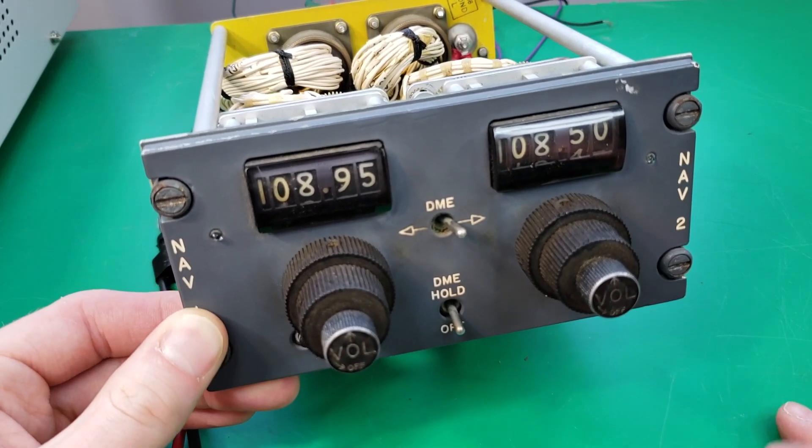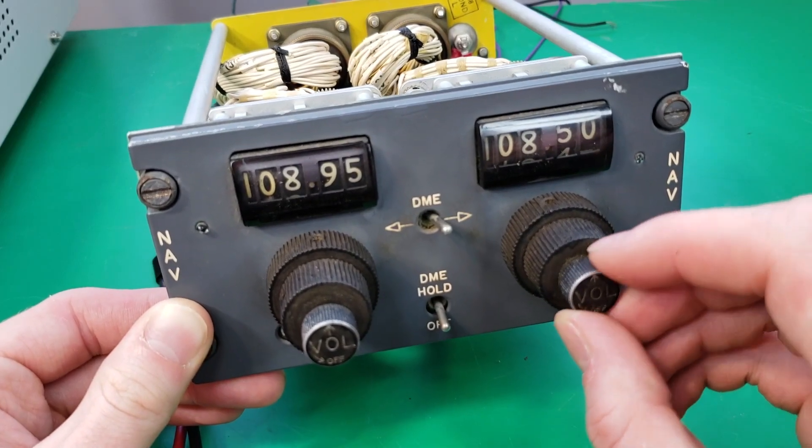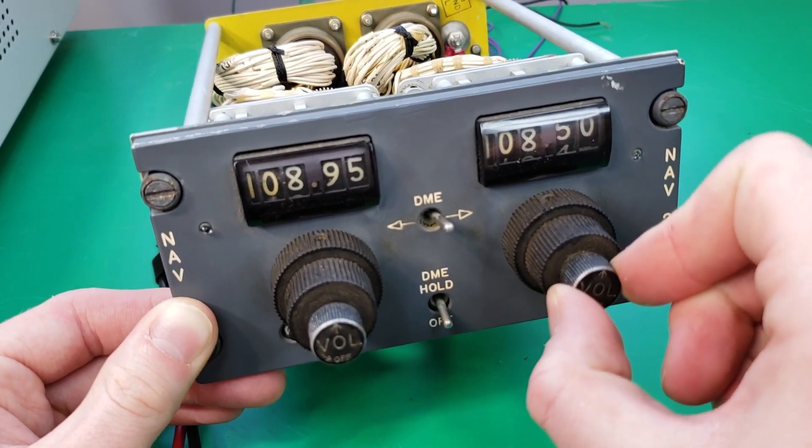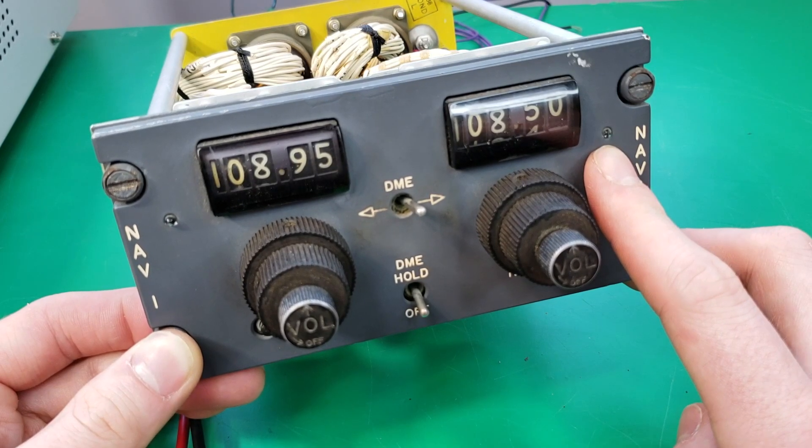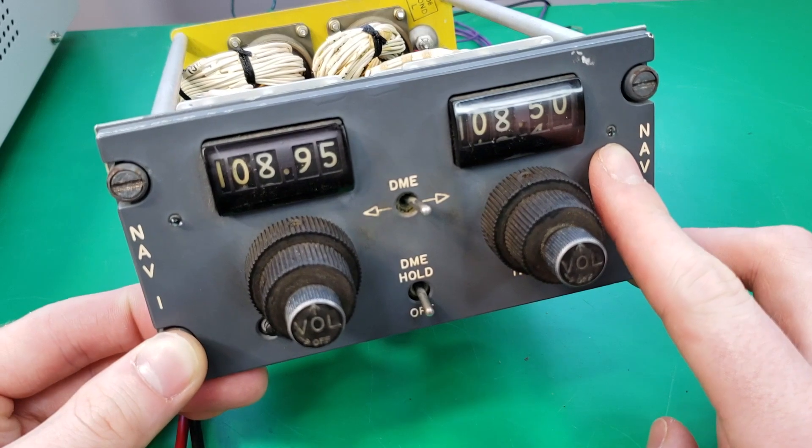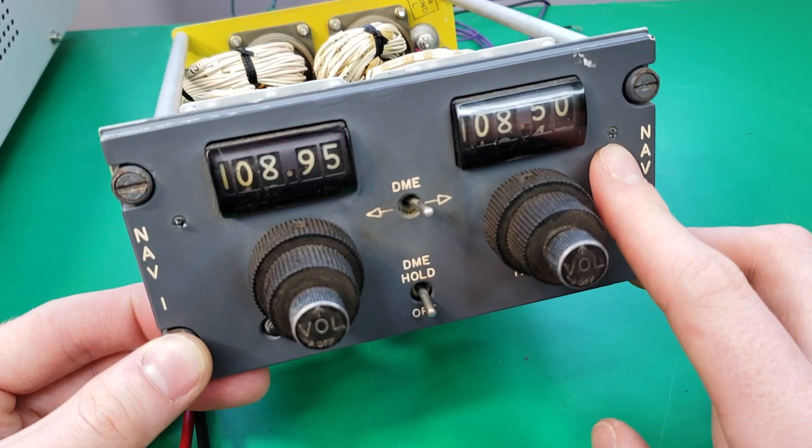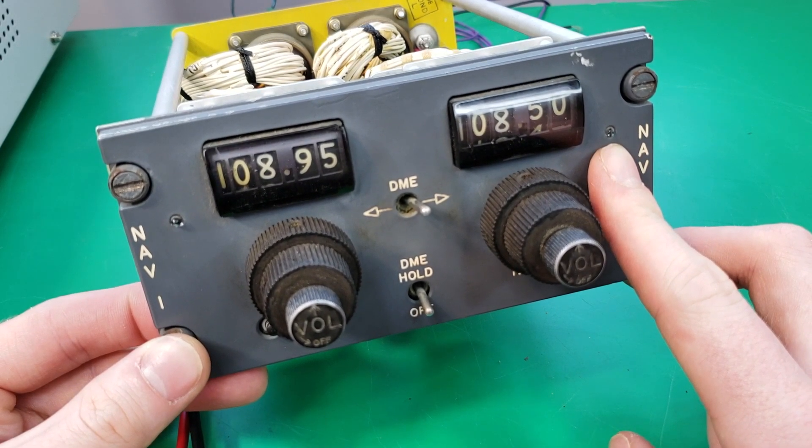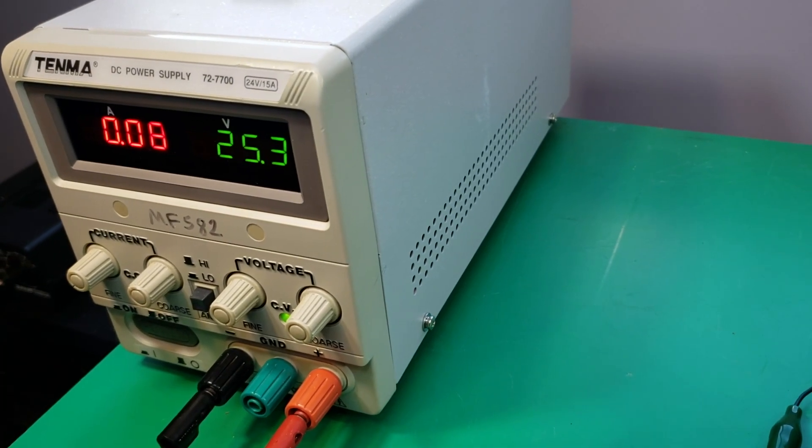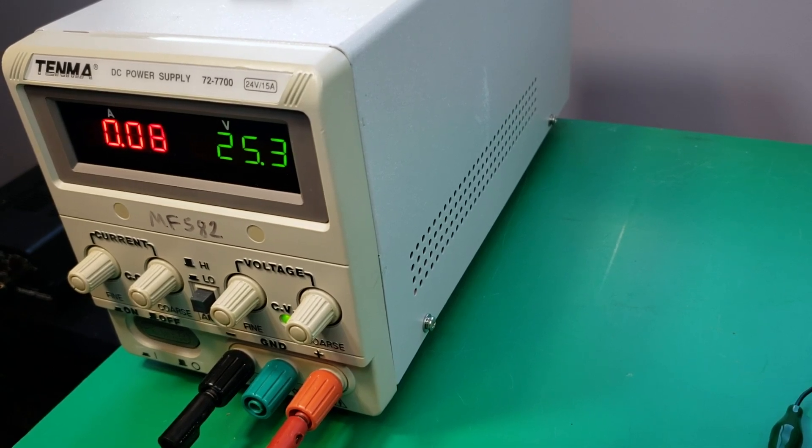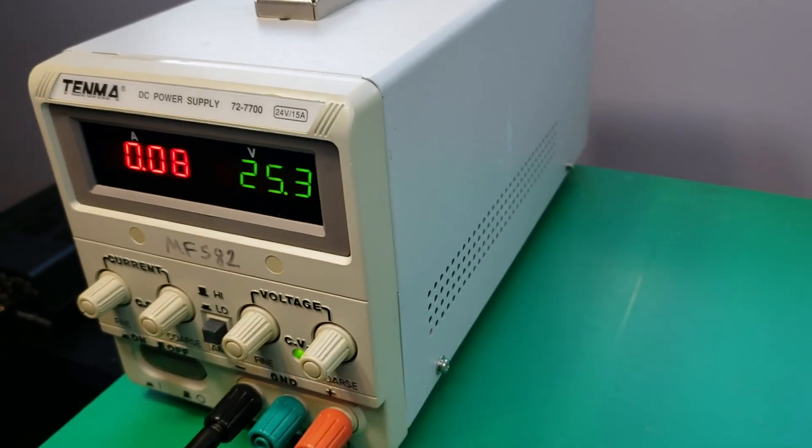The nav indicator lights are actually switched on and off by this volume knob here. You can hear the switch activate. These lights require 28 volts which is a standard voltage on most aircraft. But my bench power supply only goes up to 24 volts so that'll have to do. You can see I have my power supply set to 25 volts which is the highest it'll go. These lights are only drawing about 80 milliamps.